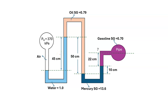Today I'll solve one numerical problem on a double pipe multi-fluid U-tube manometer. The manometer is connected with two pipelines. On the left-hand side, air is flowing with a pressure of 370 kilopascal, and on the right-hand side, gasoline is flowing. We have to calculate the pressure at the gasoline pipe.